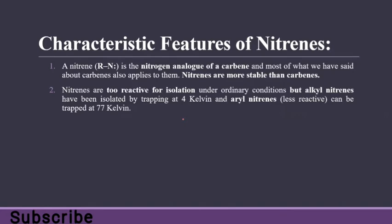Nitrines are more stable than carbenes. Everything we studied regarding carbene is also applicable to nitrines, like singlet and triplet states, because we already studied singlet and triplet carbene. Both are neutral molecules. Nitrines are too reactive for isolation under ordinary conditions, but alkyl nitrines have been isolated by trapping at 4 Kelvin, and aryl nitrines can be trapped at 77 Kelvin.